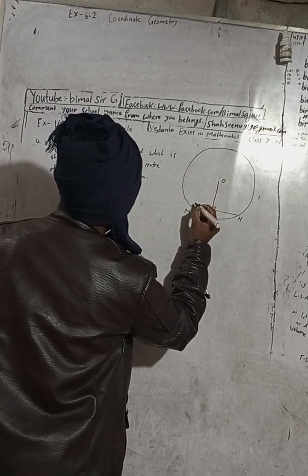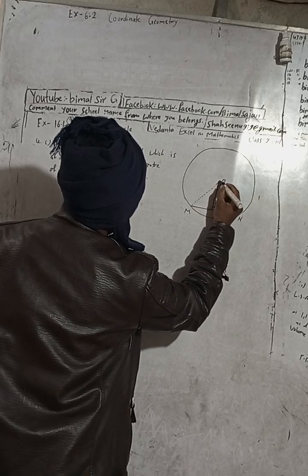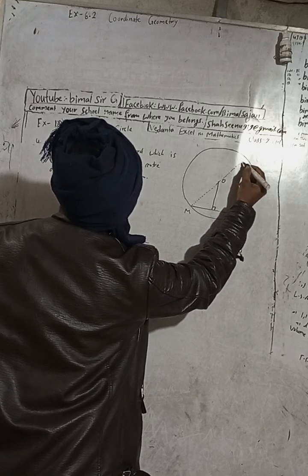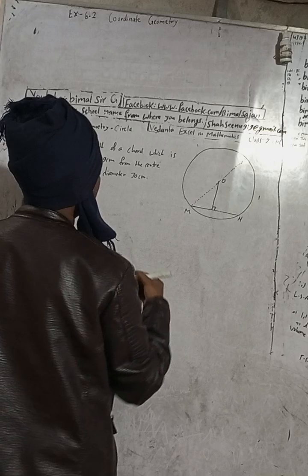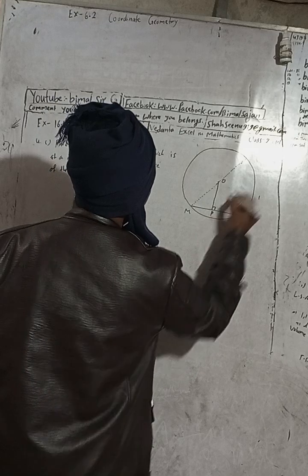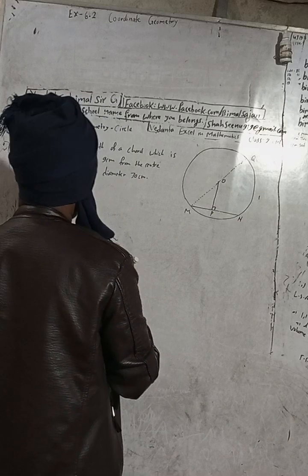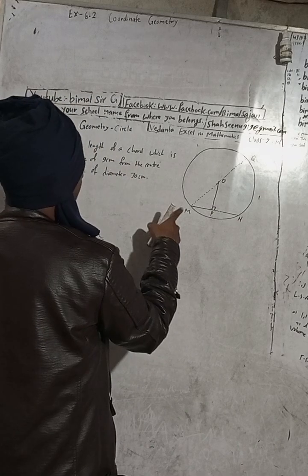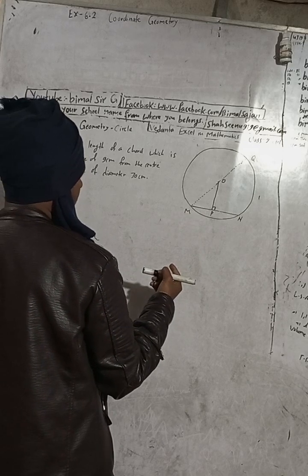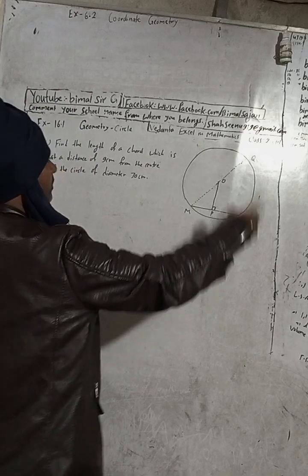If I join this with a dotted line, this is the radius, and this radius will extend to the other side of the circle, making the diameter. I will name it: this is P and this is Q. Our target is to find the length MN. For that, since this question has no figure, we have drawn it ourselves.